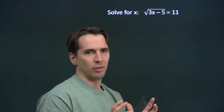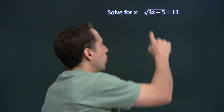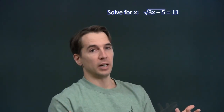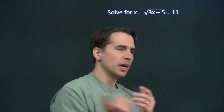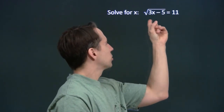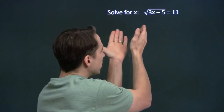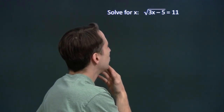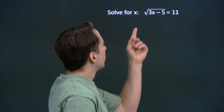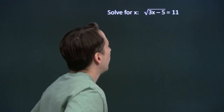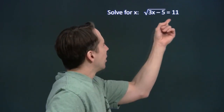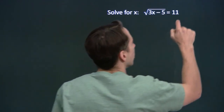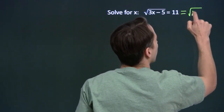The next problem almost looks like a linear equation, but there's a square root that complicates it. If there weren't a square root, we'd know what to do: if it were just 3x minus 5 equals 11, we'd add 5 to both sides, divide by 3, and solve for x. But the square root is in the way, so we want to turn this into a problem we know how to do — a linear equation. The square root of 3x minus 5 equals 11 means that 11 is the number we square in order to get 3x minus 5.